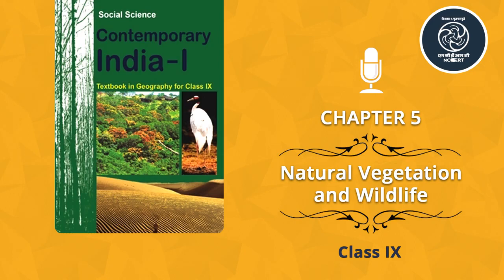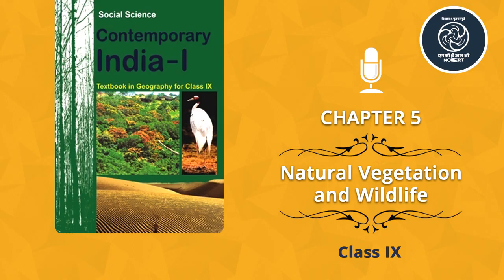Activity: Find out from newspaper cuttings the main concern highlighted. Collect more information about various endangered species from newspapers and magazines. Find out various steps taken by the Indian government to protect them. Describe how you can contribute to the protection of endangered species and birds. To protect the flora and fauna, the government has set up 14 biosphere reserves. Four of these — the Sundarbans in West Bengal, Nanda Devi in Uttarakhand, the Gulf of Mannar in Tamil Nadu and the Nilgiris (Kerala, Karnataka and Tamil Nadu) — have been included in the world network of biosphere reserves.